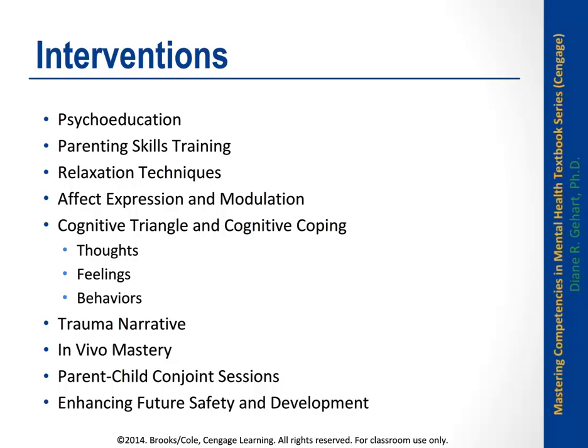Relaxation techniques are taught to help children calm themselves when they feel anxious. Affect expression and modulation work helps children identify, express, and regulate their emotions using typical CBT techniques. The cognitive triangle — a triangle between thoughts, feelings, and behaviors — is used for cognitive coping, helping children understand how their thoughts and feelings affect their behaviors, such as tantrums, and find alternative ways to honor and manage those thoughts and feelings.